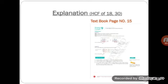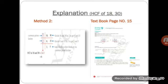Now we understand this example according to method two, which is the division method. You can see that 2 is a common prime factor of 18 and 30. 18 divided by 2 is equal to 9, and 30 divided by 2 is equal to 15.